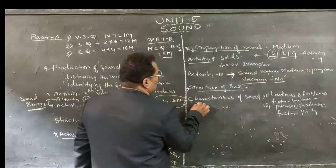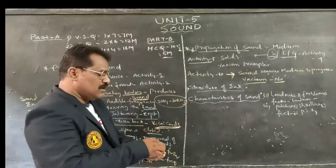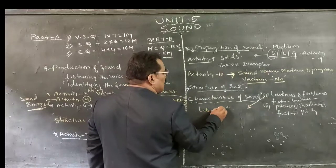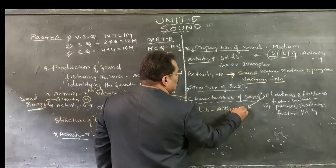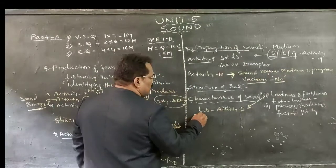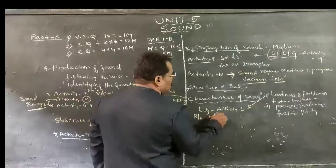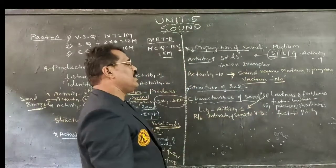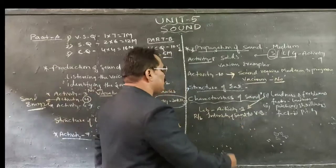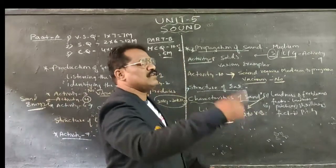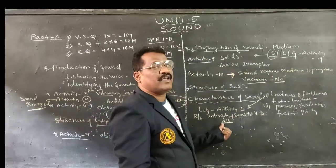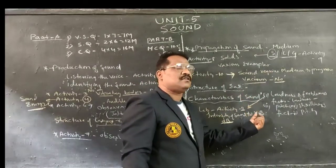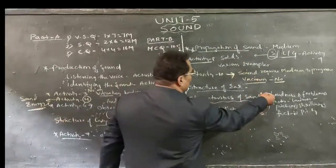Based on these characteristics, two lab activities explain loudness and shrillness. Lab Activity 1 gives the relationship between intensity of sound — intensity is measured in decibel units. As the vibrations are greater, the intensity of sound produced will be greater, which is called loudness. If the vibrations are less, the intensity of sound will be very less, which is called shrillness.